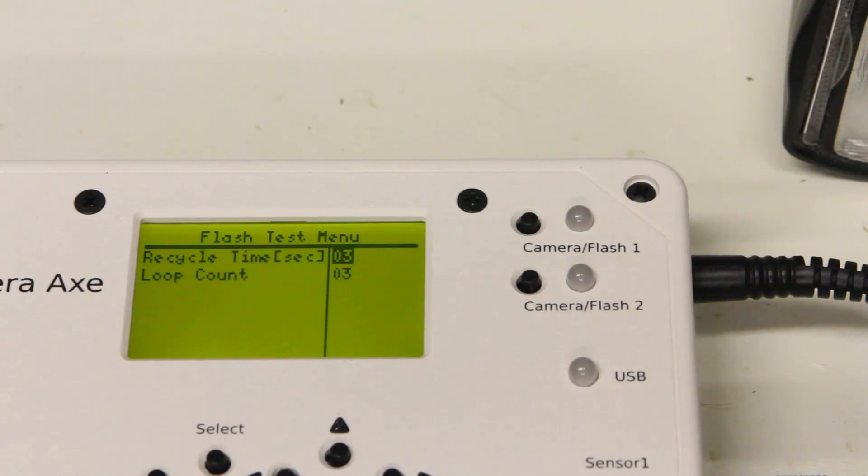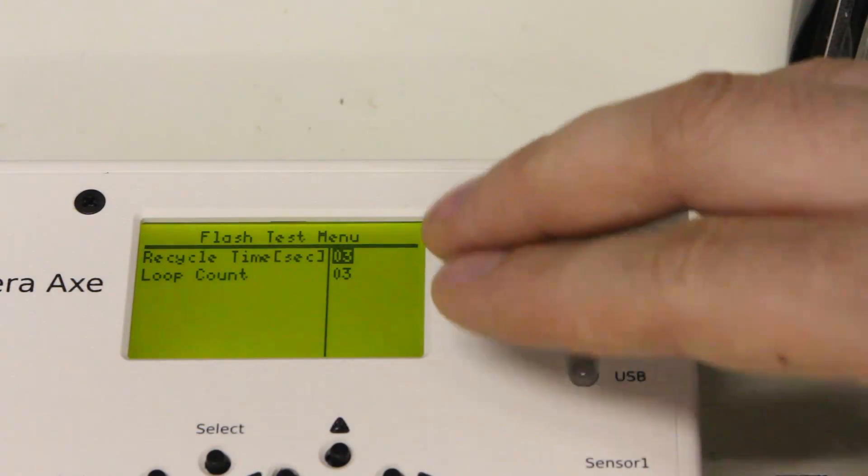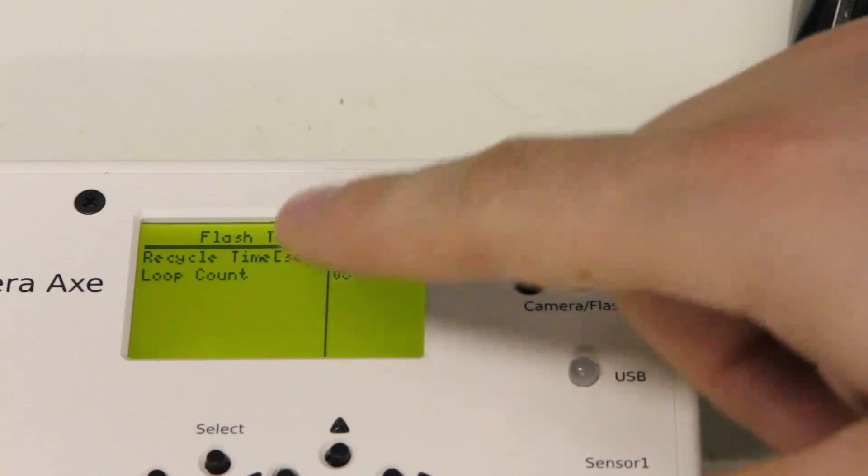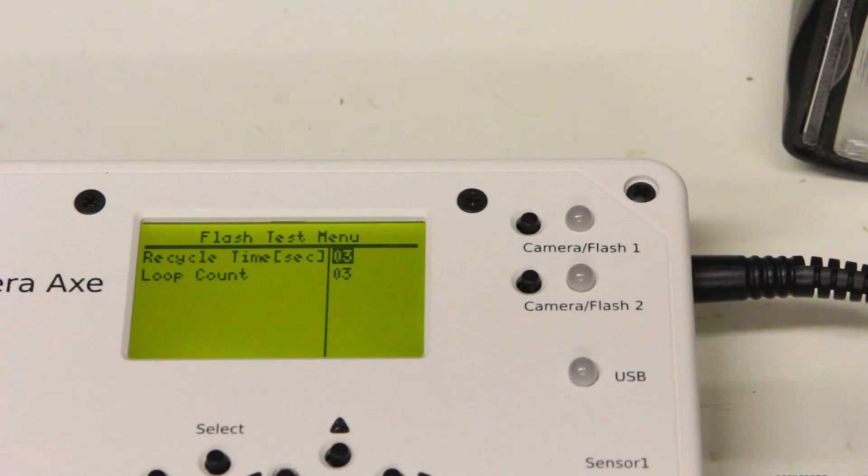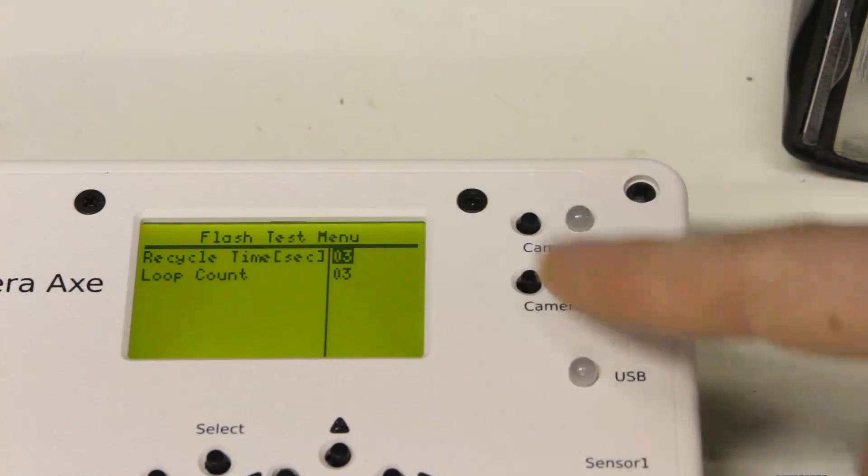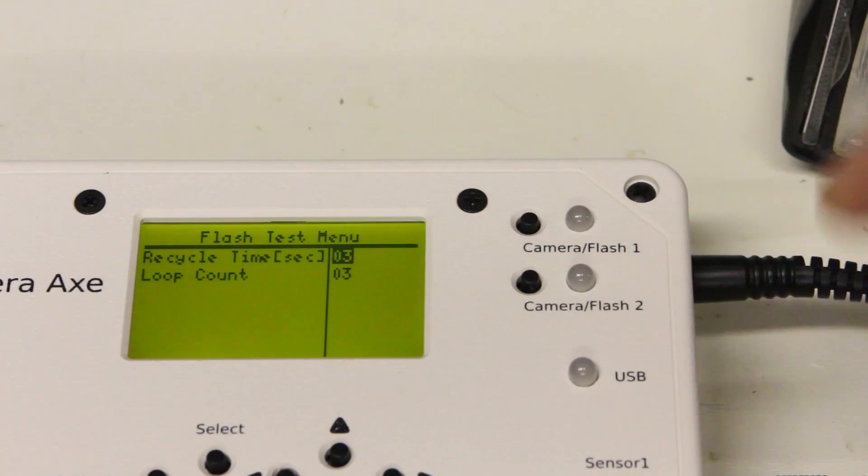Here's the new flash test menu in the latest beta version of the Camera Axe software. It has two settings. The first one is the recycle time in seconds, which is how long between each trigger of the flash. The second one is the loop count, which is how many times it will trigger the flash.